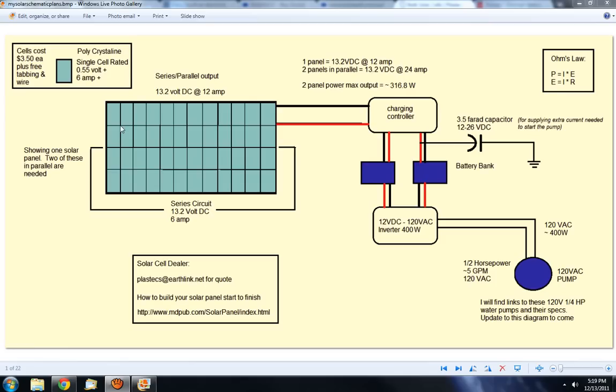Each of these cells is polycrystalline, rated at 0.55 volts each at 6 amps. I can get these for $3.50 a piece through this contact right here, plastics.com. They have solar chargers, inverters, batteries, solar cells, anything you might need for your DIY solar project. I'll provide these links in the video details.